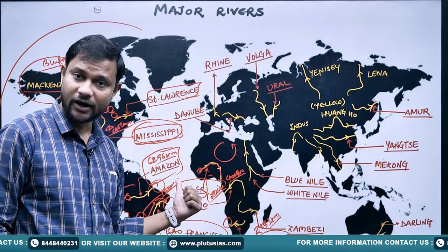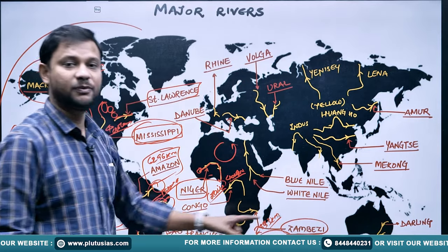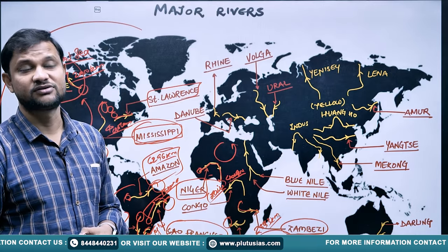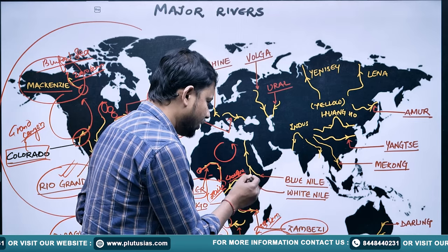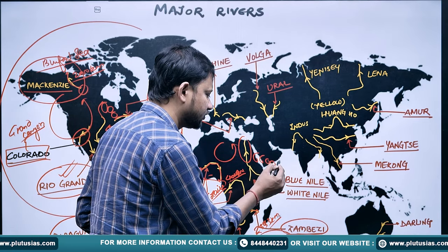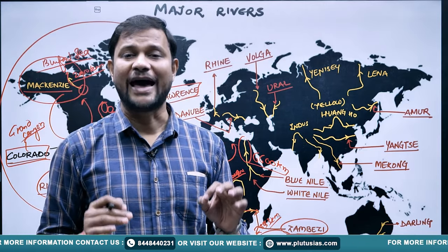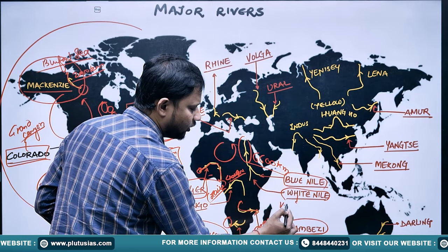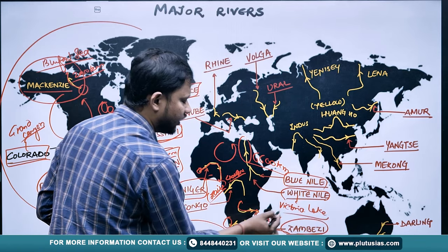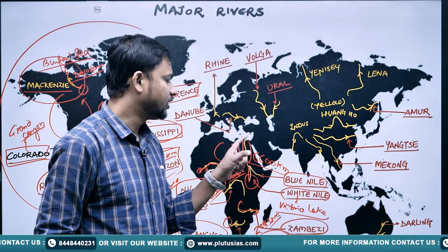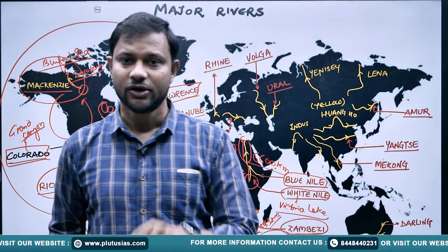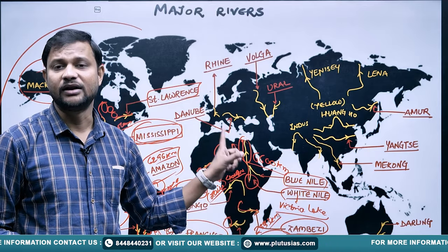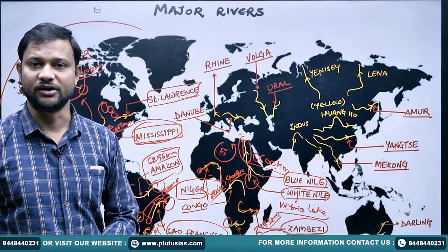The Zambezi River drains into the Mozambique Channel near Madagascar — this has been asked in various PCS examinations. Then there is the world-famous Nile River, the world's longest at 6,670 kilometers. The Nile is a confluence of two major rivers: the White Nile, originating from the world-famous Lake Victoria, and the Blue Nile, originating from the Ethiopian Highlands. It drains into the Mediterranean Sea.